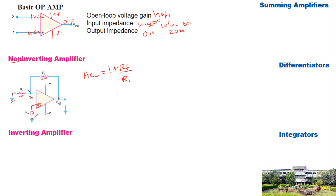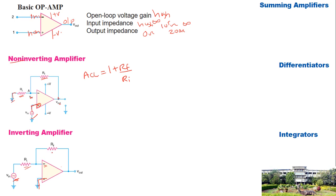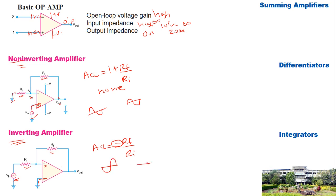In the inverting amplifier configuration, the non-inverting terminal is grounded, the input is applied at the inverting terminal through resistance Ri, and a feedback resistance Rf is connected. The closed-loop gain ACL equals minus Rf divided by Ri. The negative sign indicates an inverting amplifier — the output is 180 degrees out of phase with the input. In a non-inverting amplifier, the input and output are in phase.